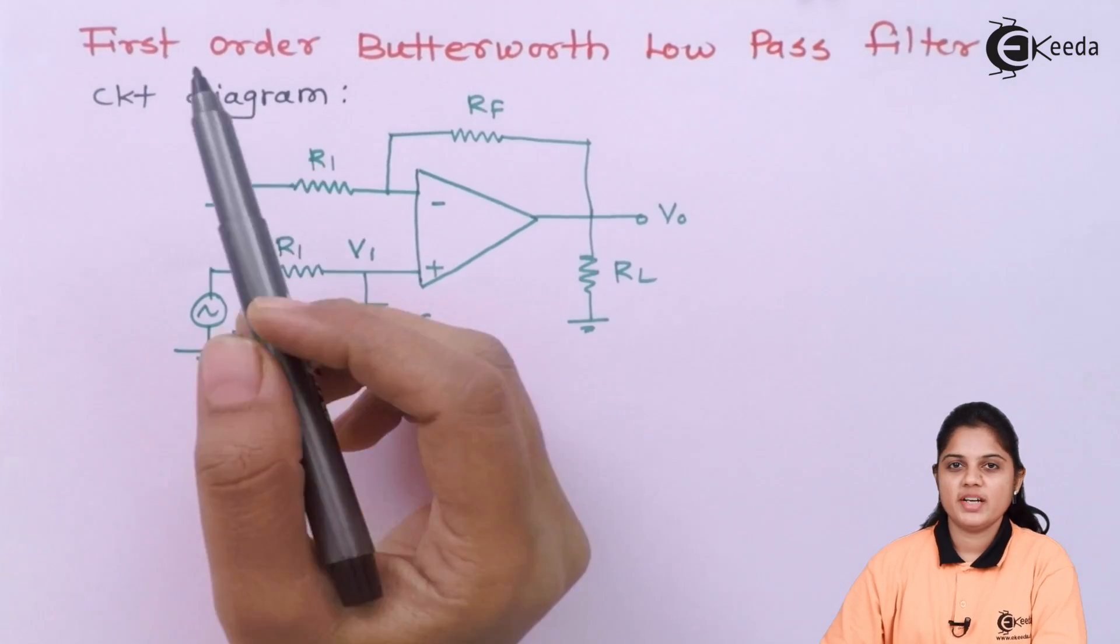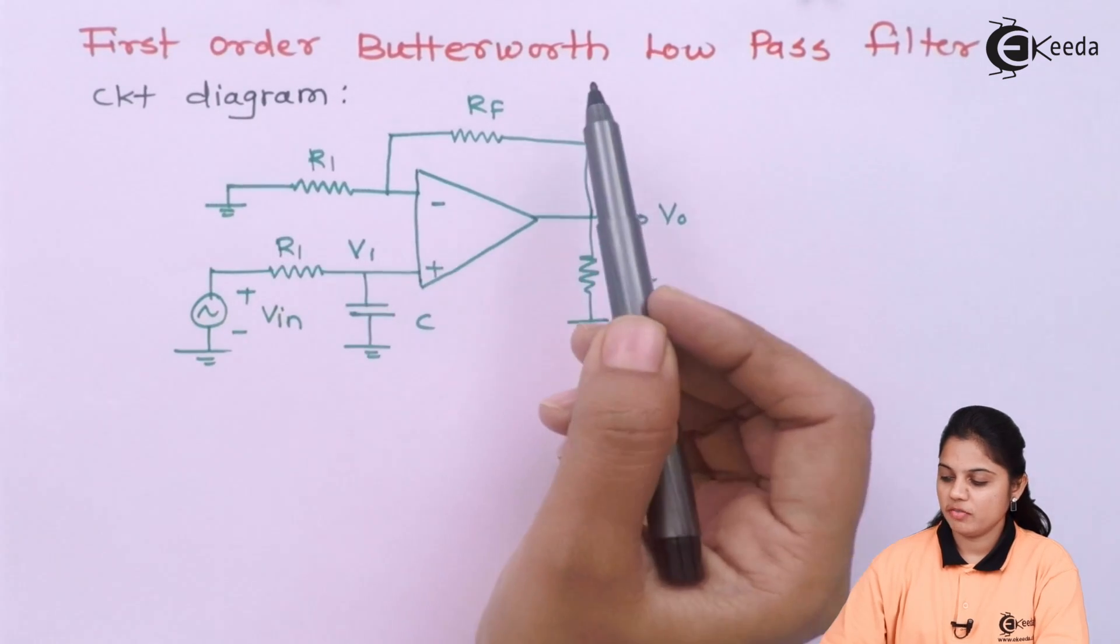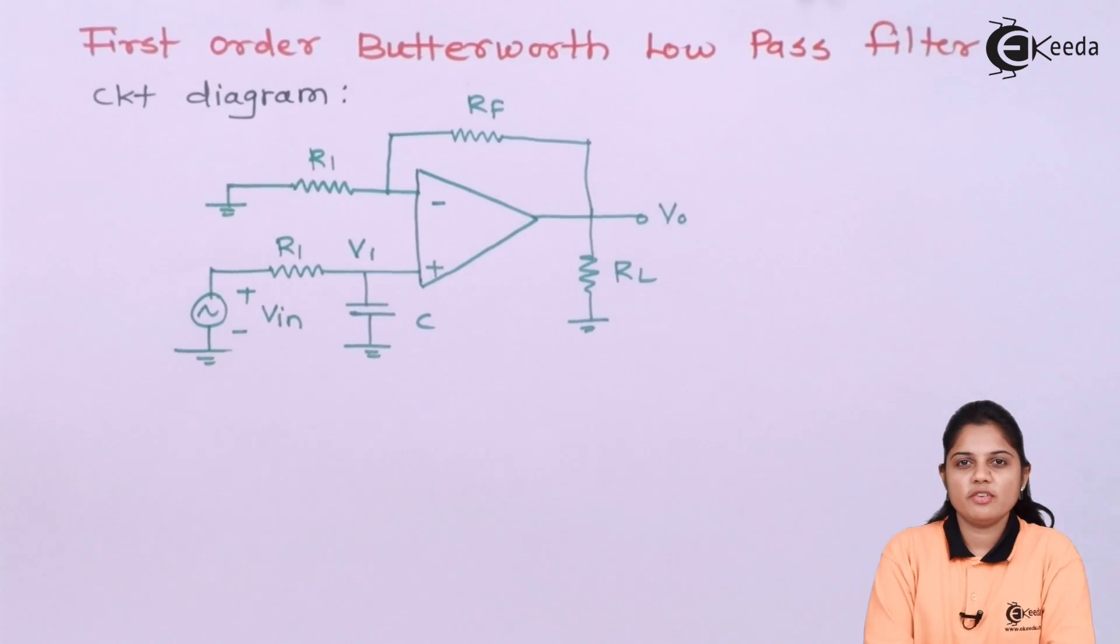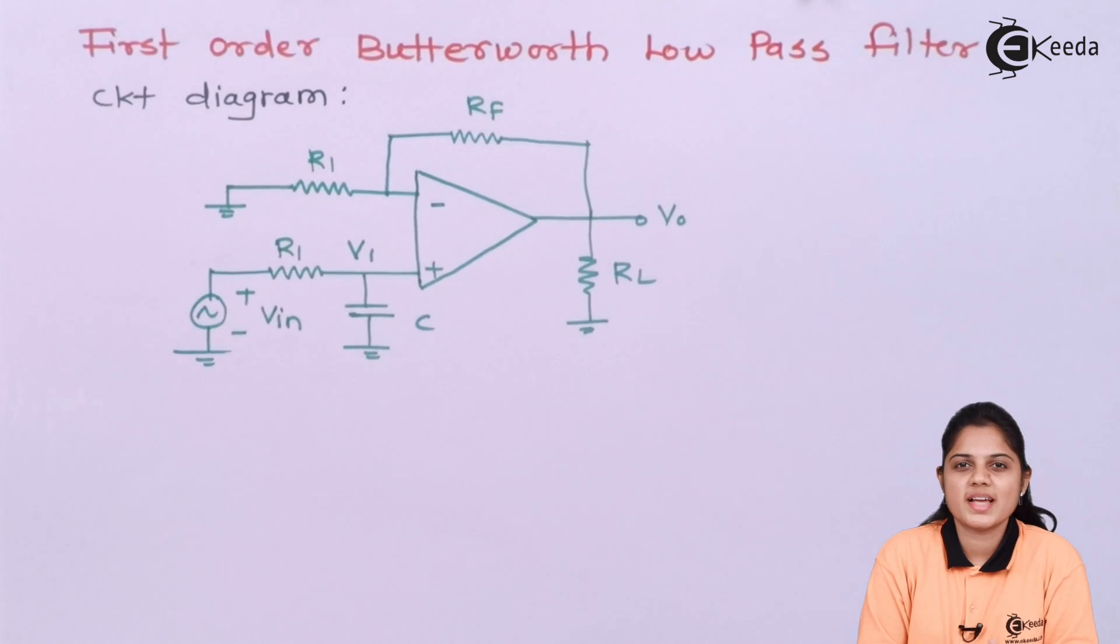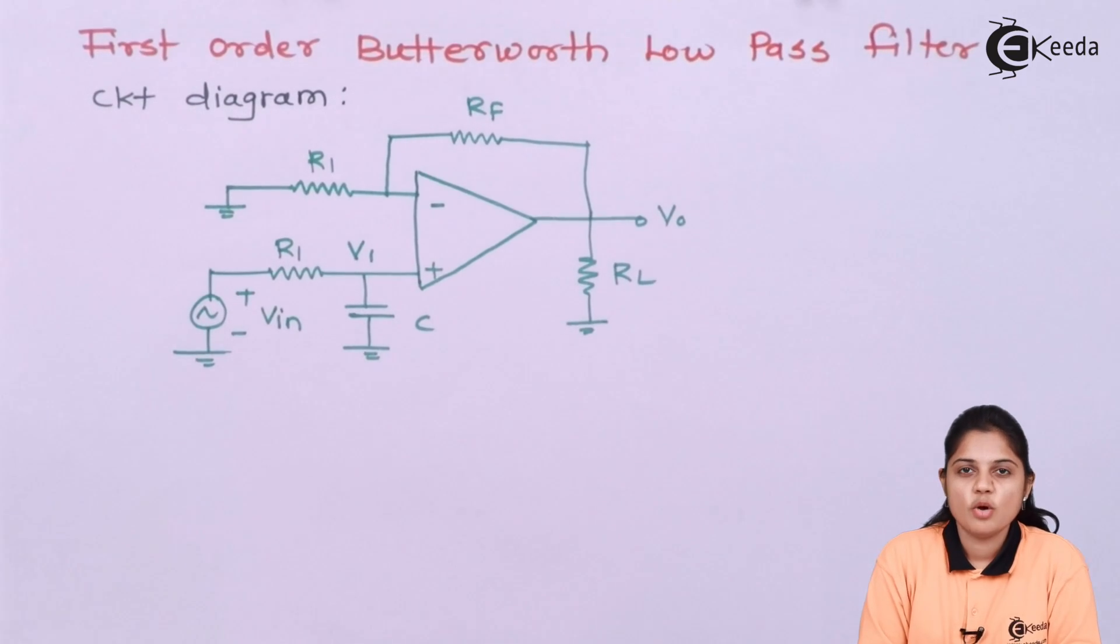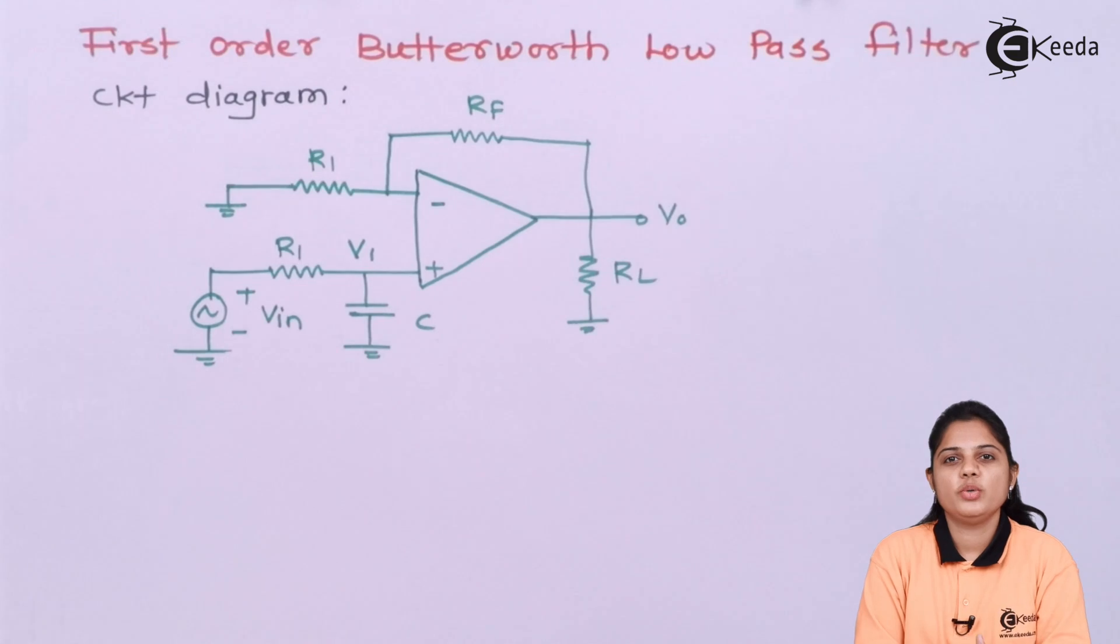So here we have a diagram for first order Butterworth low pass filter. Butterworth was the scientist who designed a filter first time whose gain is approximately to the unity.